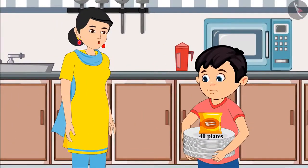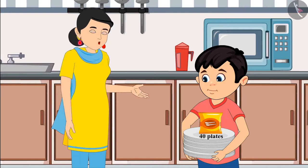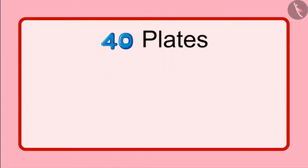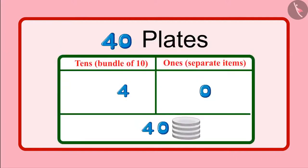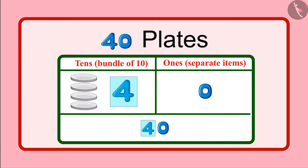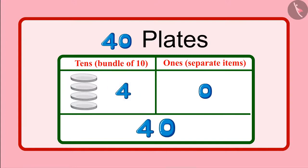No, no, Chotu. You are reading it wrong. It's written here 40 plates, which is 4 groups of 10 plates. But mummy, even 0 is written here. What about it? Chotu, here 0 is written in place of units, which means not a single open plate. And instead of 10, it is written 4, which means 4 groups of 10 plates, meaning 40 plates. So a total of 40 plates are there in this packet.